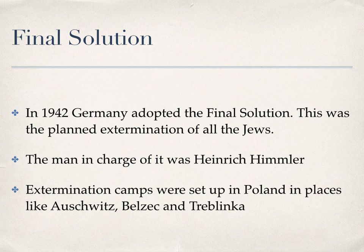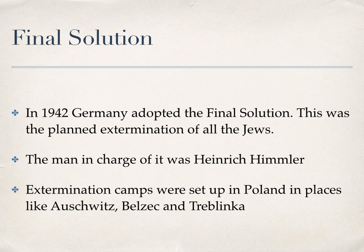After the invasion of Russia and Operation Barbarossa, Germany decided to implement the Final Solution. In 1942, Germany adopted the Final Solution — the planned extermination of all the Jews. It wasn't enough anymore just to get them out of Europe; now they wanted to kill them all. The man in charge was Heinrich Himmler.